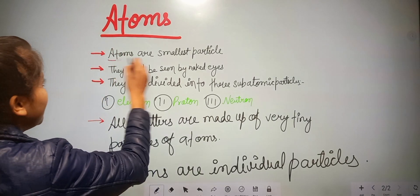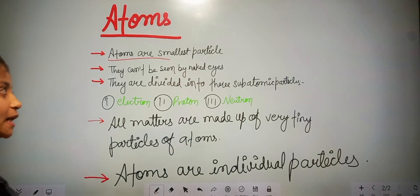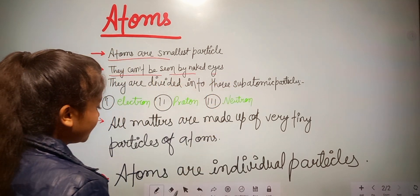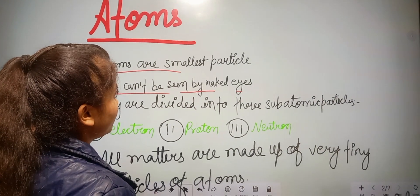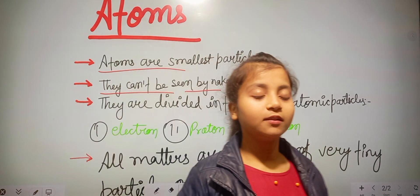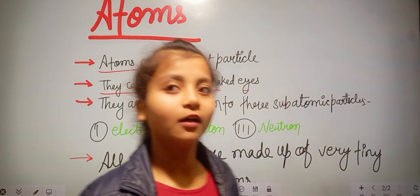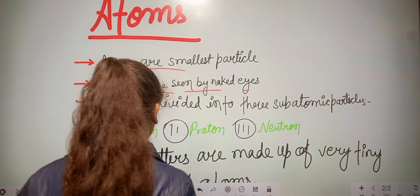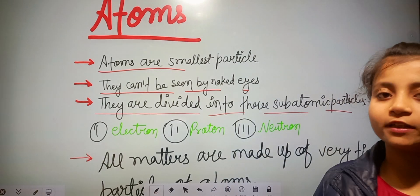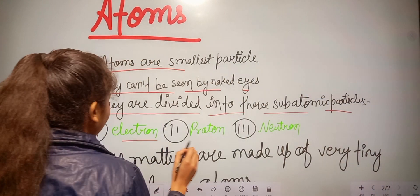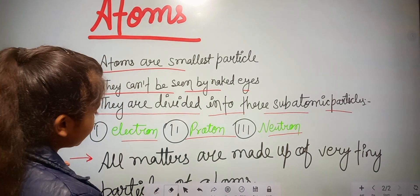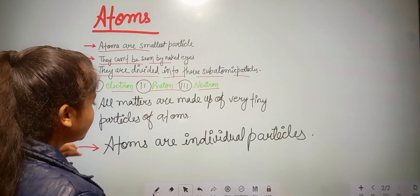First of all, atoms are the smallest particles — they cannot be seen by the naked eye; they can only be seen by microscopes. They are divided into three subatomic particles, that is electron, proton, and neutron.